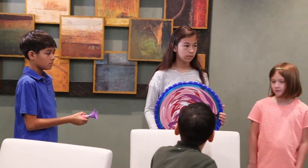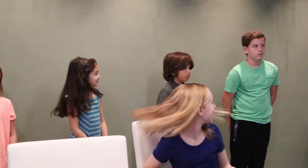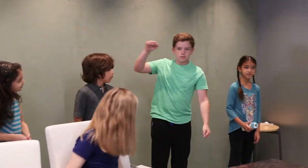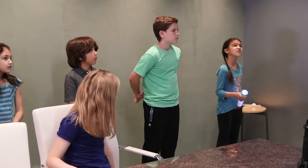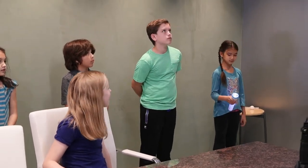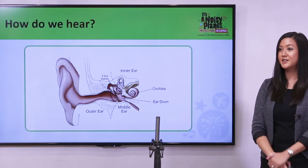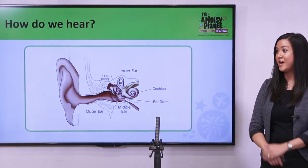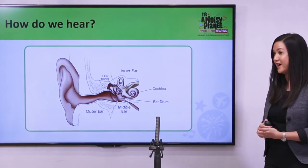You'll be the eardrum, so you hit that. And then you're the malleus, so you vibrate. You're the incus, so you vibrate. And you're the stapes, so you vibrate. And you're the cochlea, so you slosh. And then you're the brain, so you get the signal to hear the sound. Now that you've practiced, let's do it — and remember that it's a chain reaction, and it happens really fast.